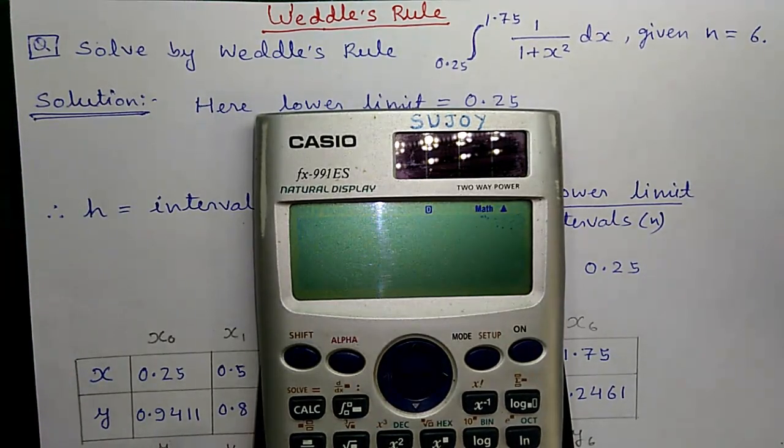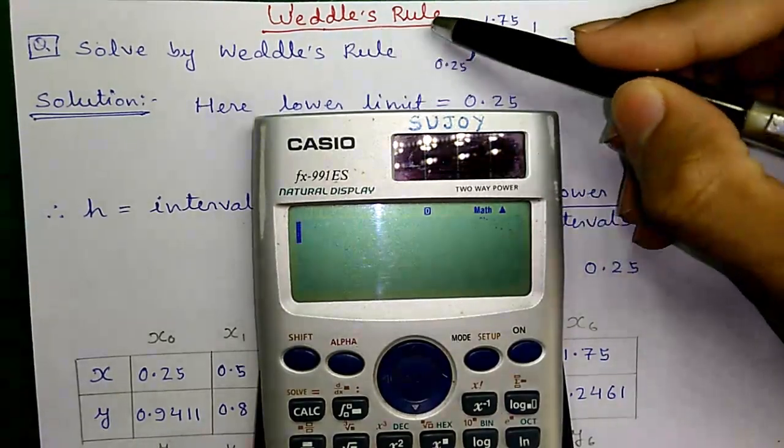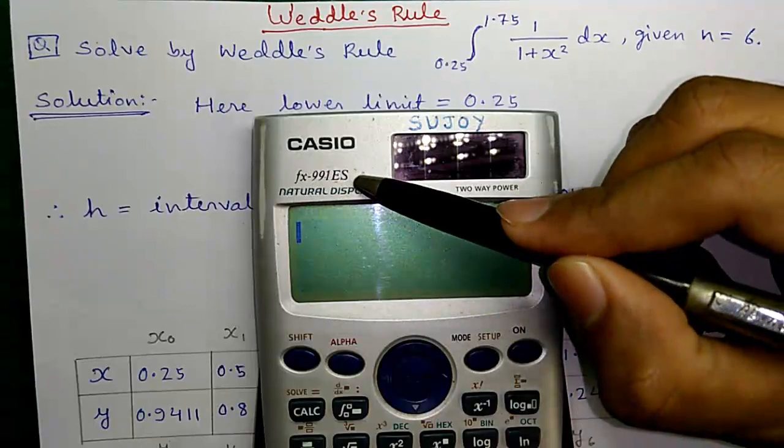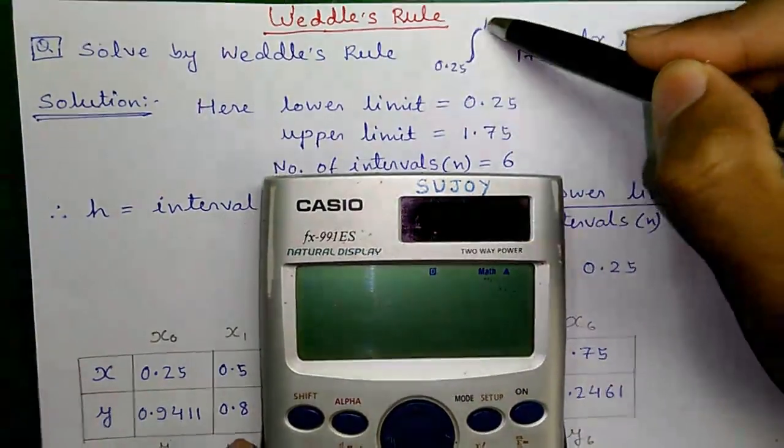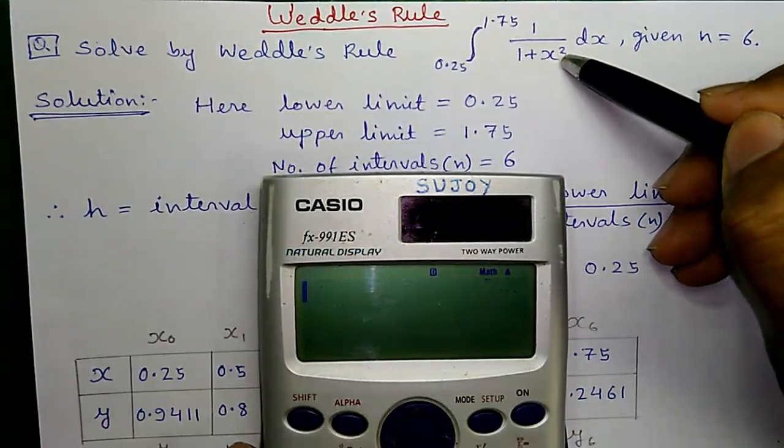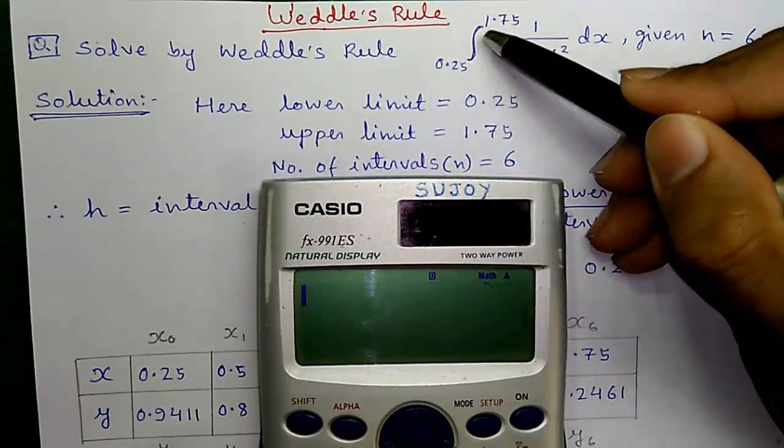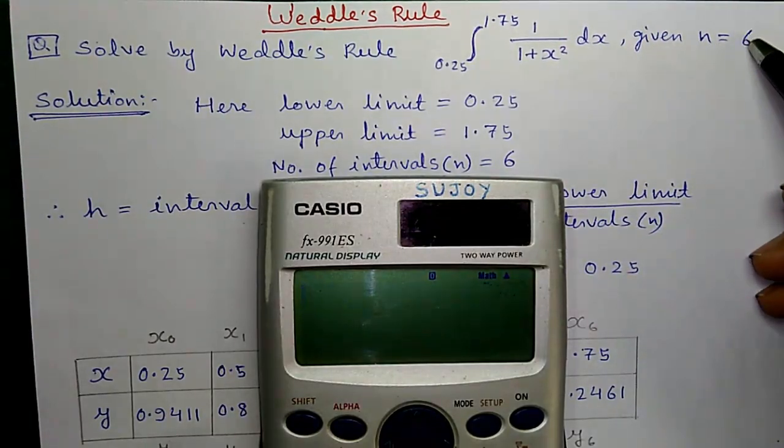Hello friends, I am Sujoy and today I will show you how to solve a numerical integration problem using Weddle's rule, also using a shortcut technique on Casio FX-911-ES scientific calculator. So, let's start. Here is our integration question. Find the integration of 1 divided by 1 plus x squared dx with lower limit of 0.25 and upper limit of 1.75 and n or number of intervals is 6.